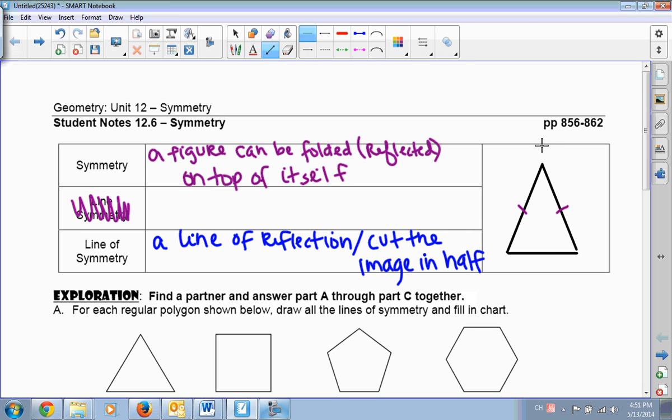So our line of symmetry here would go vertically through the top and the bottom of the triangle. If we tried to cut it horizontally, it would not cut the image in half because the top part would be smaller than the bottom part. So this only has one line of symmetry at this point.